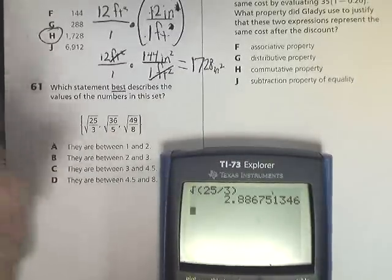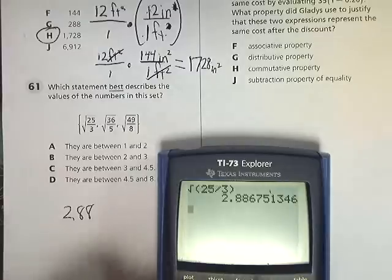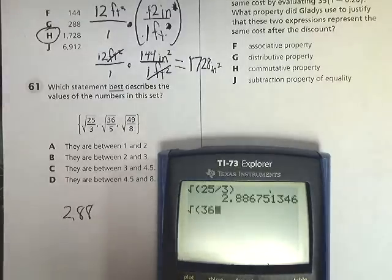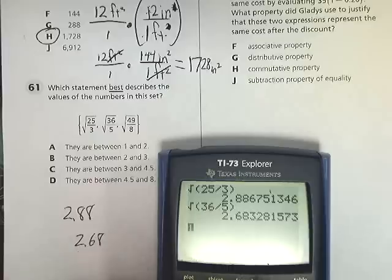So the first one is 2.88, and then the next one is 2.68, and the last one is 2.47.